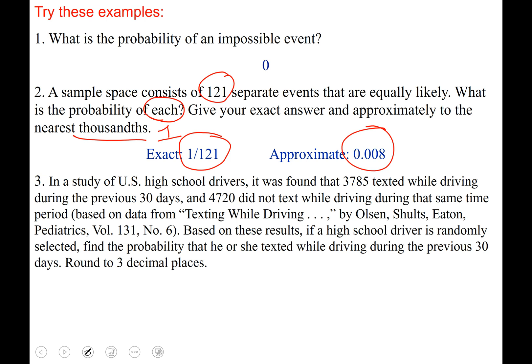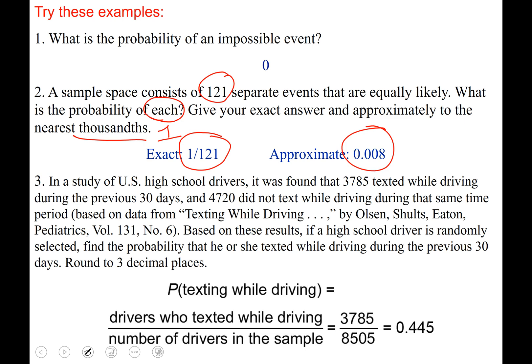Okay last one, if you put 0.445 you got it right. Nice job and the work is here for you to see if you got it wrong or if you just want to write the full solution. Capital P texting while driving equals numerator is 3785, denominator 8505, and we gave our answer accurate to three decimal places because it said to do so in the directions.